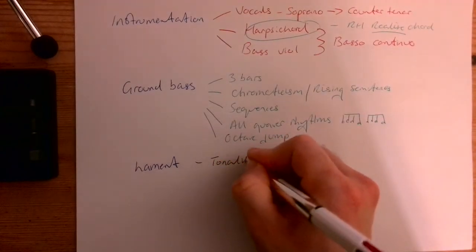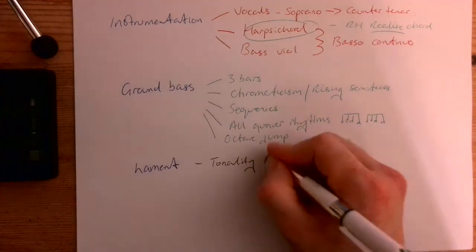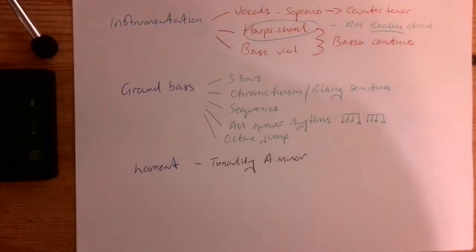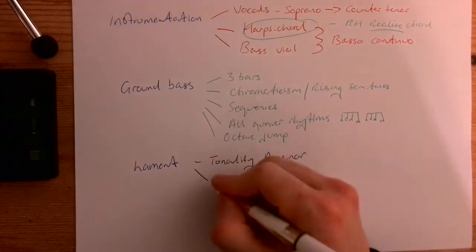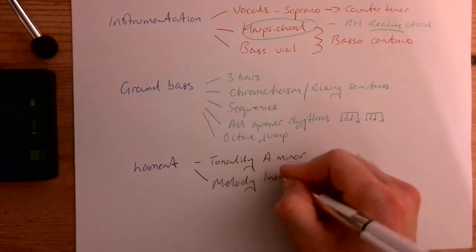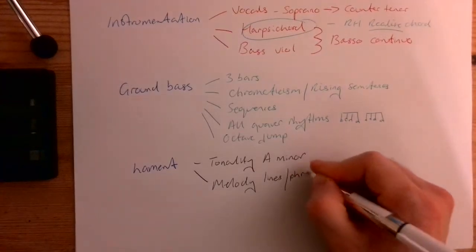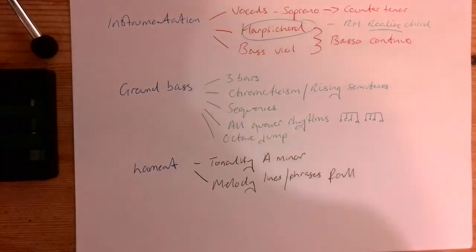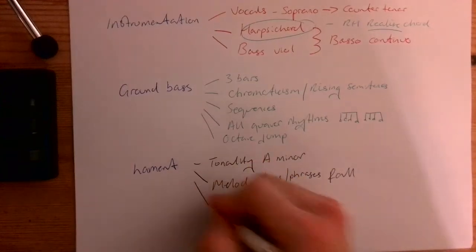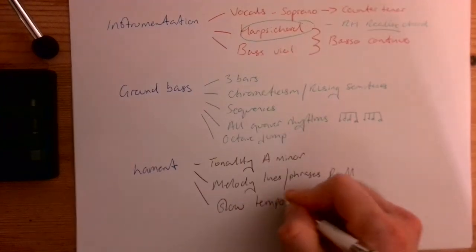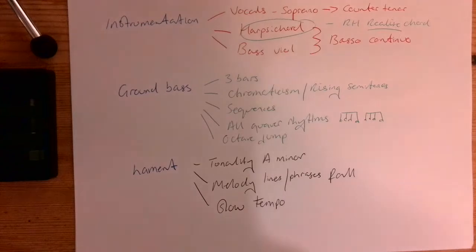So the tonality is what type of key it's in. The key this piece is in, or in fact starts and finishes in, is in A minor. The melody lines, or the phrases that make them, rather, all fall. And then the tempo is slow. So all of these things together make it sound like a lament.